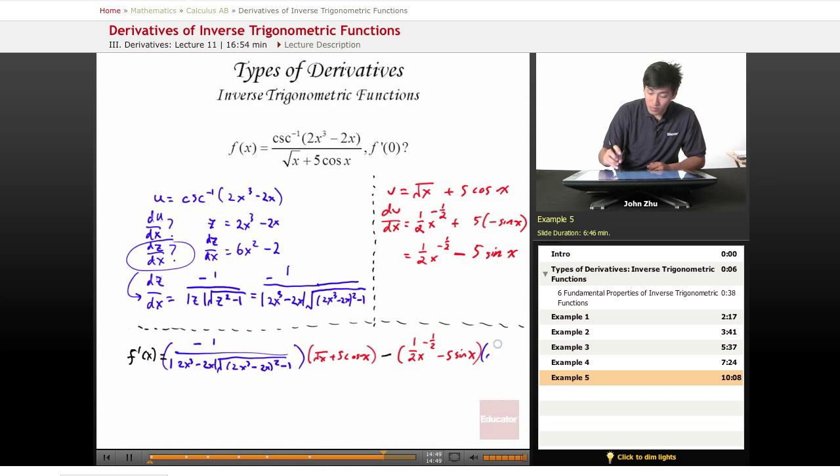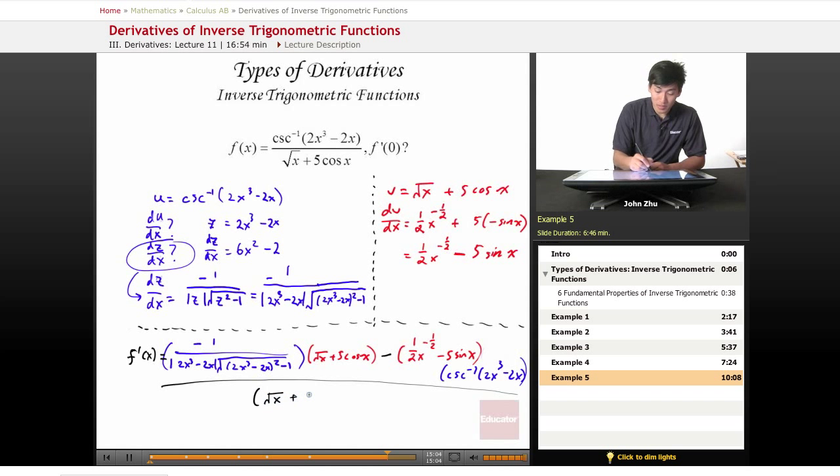which is cosecant inverse of 2x cubed minus 2x. And of course, all this gets divided by the bottom term squared, so square root of x plus 5 cosine of x squared. Wow.